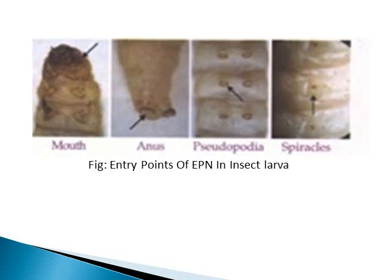This photograph shows the entry points for the nematode into insect larvae. The nematodes act on larvae that have slow activity. The mouth is a major entry point for the EPN. The second entry point is the anus, which is used for excreting fecal matter. The prolegs or pseudopodia — the leg-like structures or probes on the body of the insect — also have surface contact with the soil when the insect is moving, and these pseudopodia also serve as entry points for the EPN.